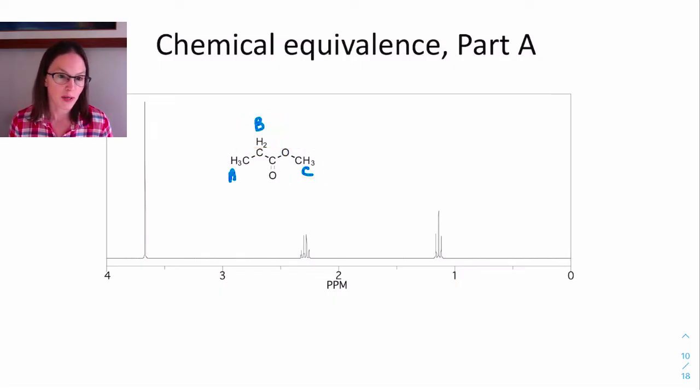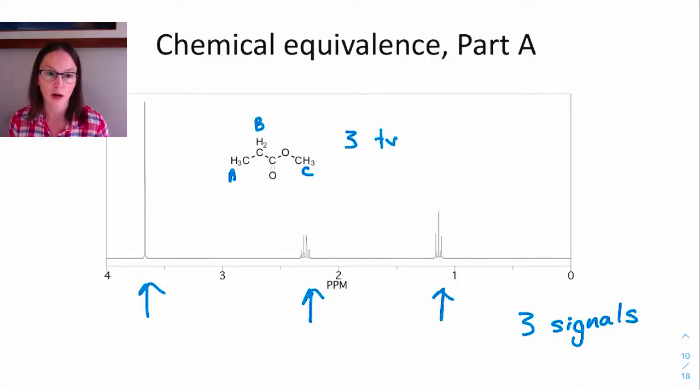There's a signal just above 3.5 ppm, a second one just above 2 ppm, and a third at about 1 ppm. That's the first idea about chemical equivalence. We see the same number of signals as there are chemically unique protons in the molecule.